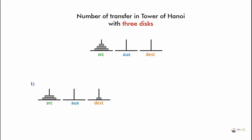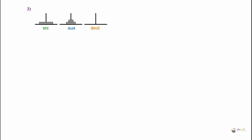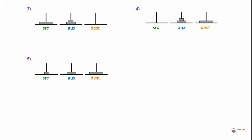In the first transfer, disc one is moved from Source to Destination. In the second transfer, disc two is moved from Source to Auxiliary. Then disc three is moved from Source to Destination. In the sixth move, disc three is moved from Auxiliary to Destination.